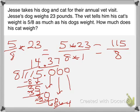We'll add another 0. Bring down that last 0. 40 divided by 8 is equal to 5. 5 times 8 is 40. When we subtract, we have nothing left over. Therefore, 5/8 of 23 is equal to 14.375 pounds.